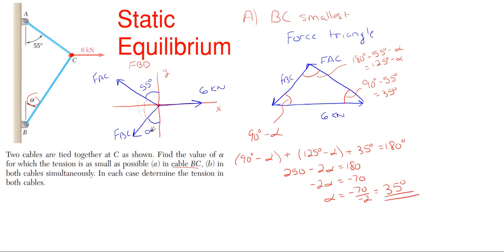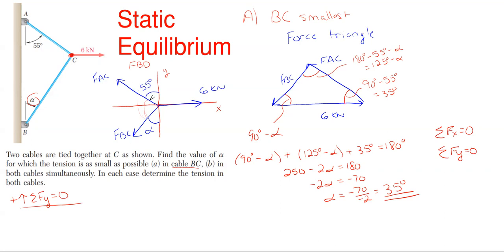Now that we know alpha is 35 degrees, we need to find the actual values of F_AC and F_BC. To do that, we sum forces in the x-direction equal to zero and sum forces in the y-direction equal to zero. F_AC points up and to the left, so its components are up and to the left. F_BC points down and to the left. The six kilonewtons force has no y-component since it's along the x-axis.